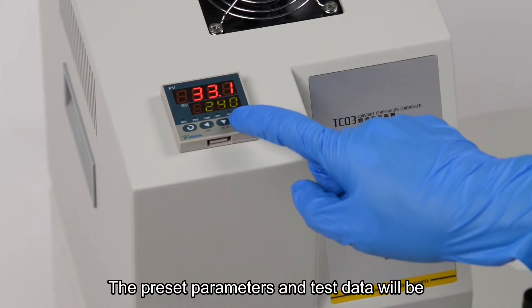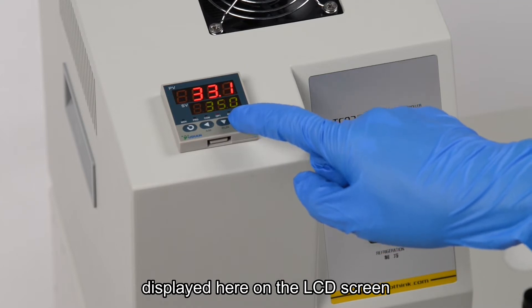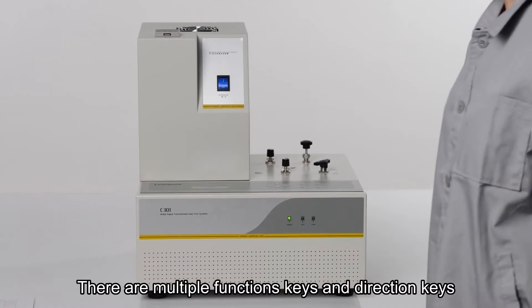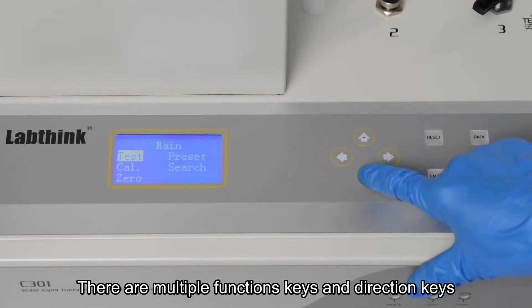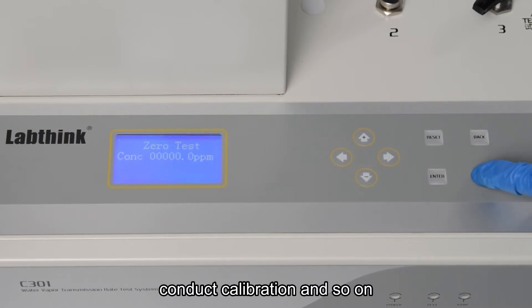The preset parameters and test data will be displayed here on the LCD screen. There are multiple function keys and direction keys on the operation panel. By pressing these keys, we can start or stop the test, preset the parameters, conduct calibration, and so on.